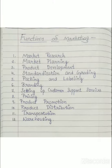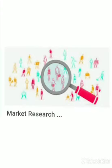So these are all the functions of marketing. There are totally 12 major functions of marketing. They are: market research, market planning, product development, standardization and grading, packing and labeling, branding, setting up customer support services, pricing, product promotion, product distribution, transportation, and the last function is warehousing. All these functions are a continuous process and interlinked with each other. The first function is market research.